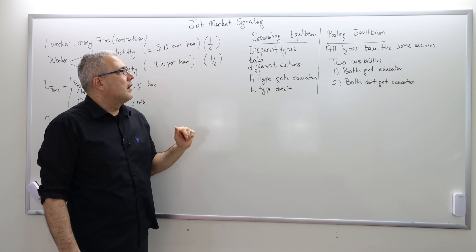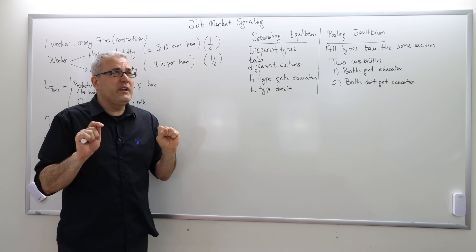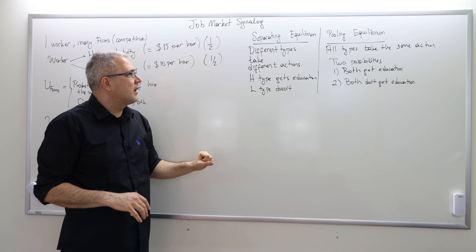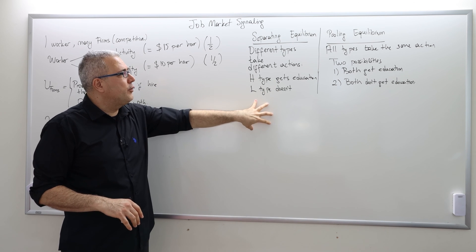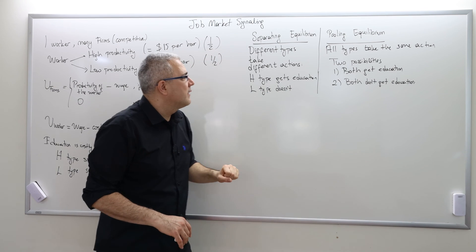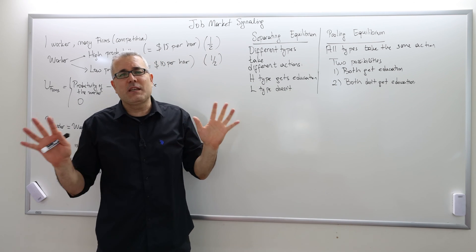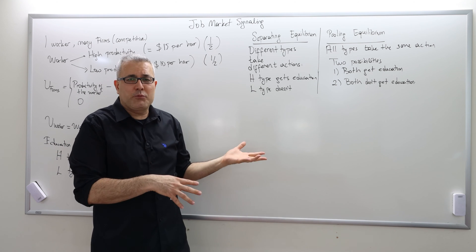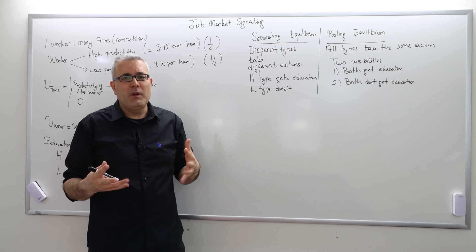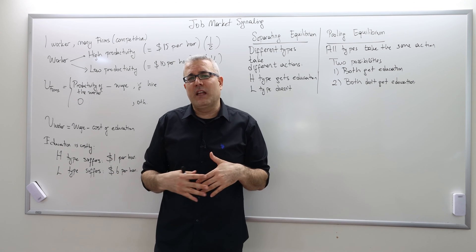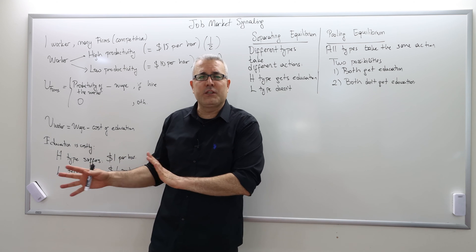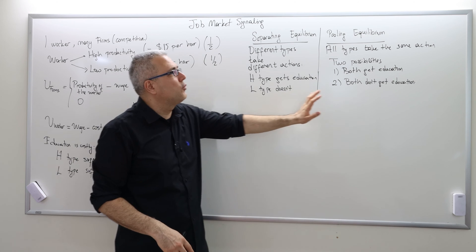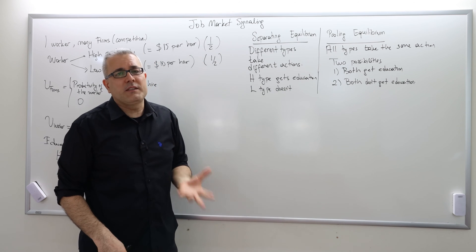In this game there might be multiple outcomes, but we categorize them as the two most important: separating equilibrium versus pooling equilibrium. Sometimes there might be a mixture — neither separating nor pooling — we call it hybrid equilibrium, but for this intermediate level course we're going to ignore such equilibria.